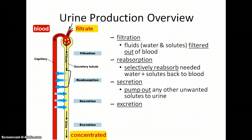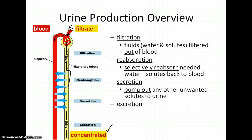The reverse can also happen in a form of active transport, where the blood gives the filtrate back a little bit of unwanted things. By the time we get down to the very bottom of the nephron, we've got a pretty good concentration of urine that can go out the nephron into the collecting duct, the calyx, the renal pelvis, out the ureter, and stored in the bladder.